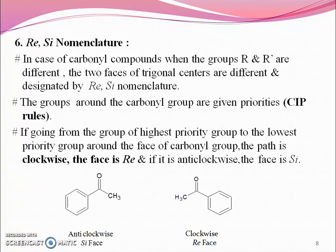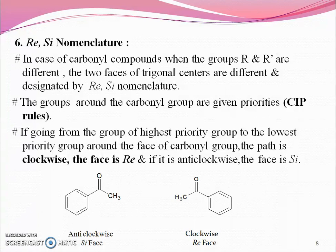The Re and Si nomenclature. Re and Si are the two faces. In case of carbonyl compounds, when the groups R and R' are different, the two faces of trigonal centers are different and they are designated by Re and Si nomenclature. The groups around the carbonyl group are given priorities based on the CIP rules, that is Cahn, Ingold and Prelog rules, also known as sequence rules. If going from the highest priority group to the lowest priority group around the face of the carbonyl group, the path is clockwise then the face is Re, and if it is anticlockwise then the face is Si. For example, in acetophenone: anticlockwise is Si face, clockwise is Re face.